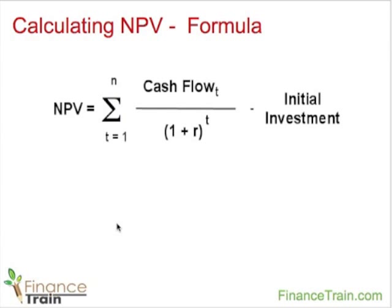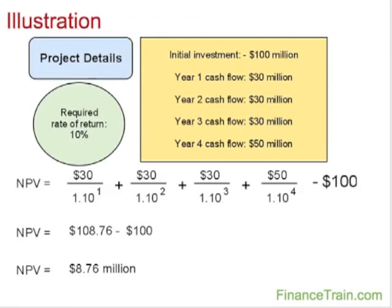The formula on screen is used to calculate the NPV of a project. The numerator represents the cash flow at time t. R represents the discount rate chosen to calculate the present value — this is also the desired rate from the project. T represents the number of periods for which we will receive the cash flows.